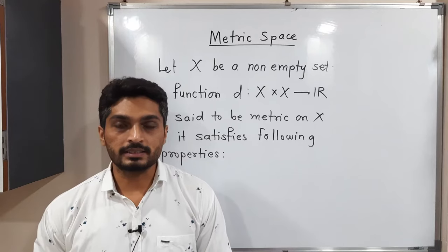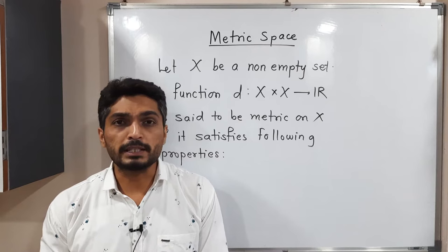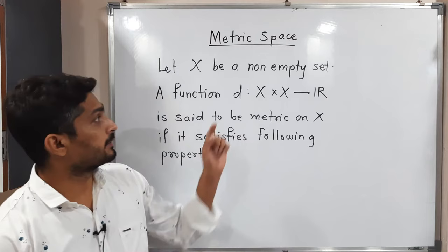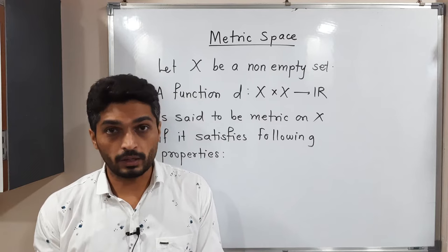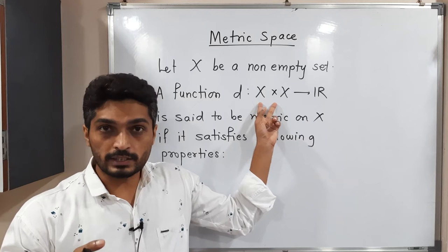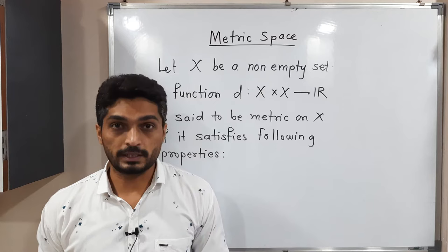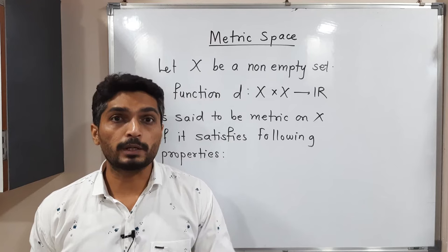Let us discuss the concept of metric spaces. Metric is nothing but distance, and we denote it by D as you can see here. We need to have some non-empty set X, and we define D on X cross X. D is a function from X cross X to R which satisfies four properties. If this function D satisfies those four properties, then we declare it is a metric on X.